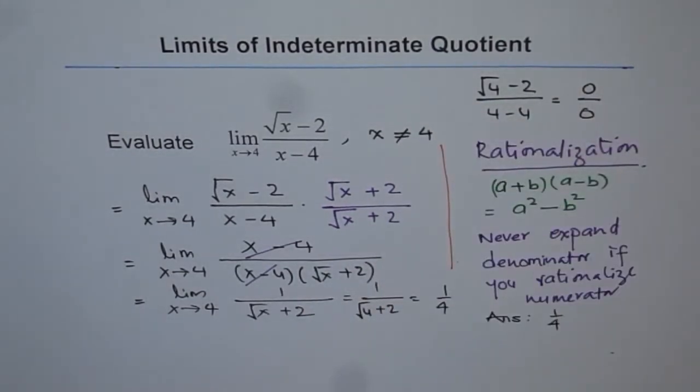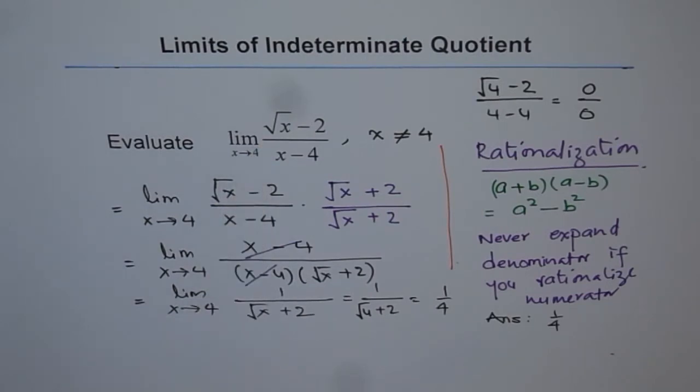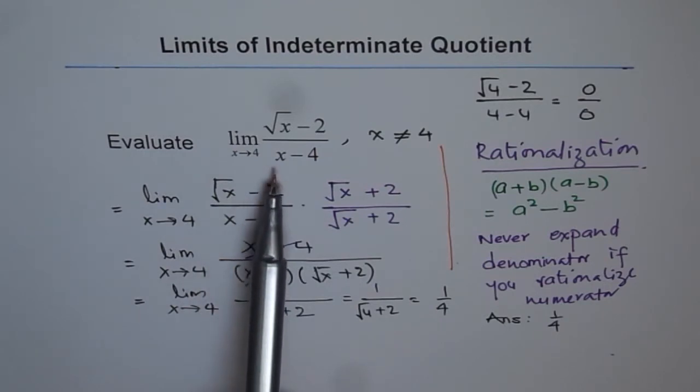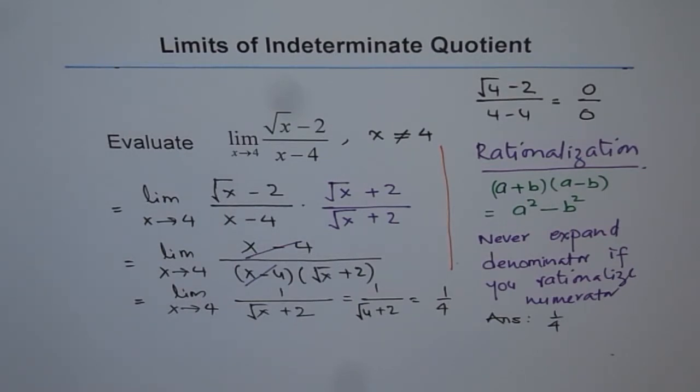So, remember, if you have square roots, in that case, rationalize the portion which has the square root, correct? If the square root is in numerator, rationalize numerator. If square root term is in denominator, rationalize denominator, right? And thereby, you can solve and get the limit.